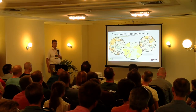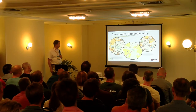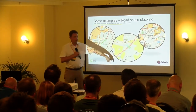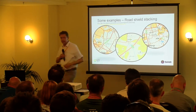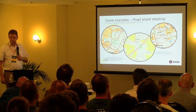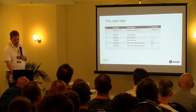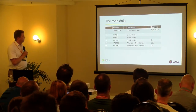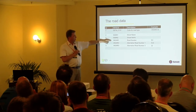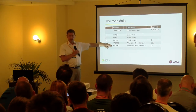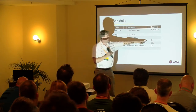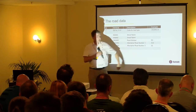Some examples from the National Land Survey of Sweden — you could stack shields along the road, perpendicular, or on top of each other. The example I'll show today is stacking them vertically. The data has a primary road number, an alternative road number, and a third alternative road number in some cases. Most of the time the alternatives could be empty, or it's just one road shield.